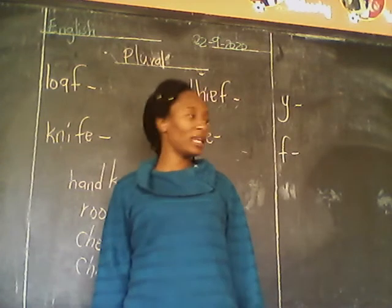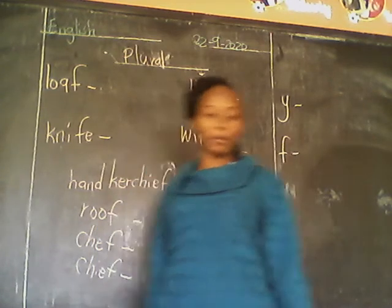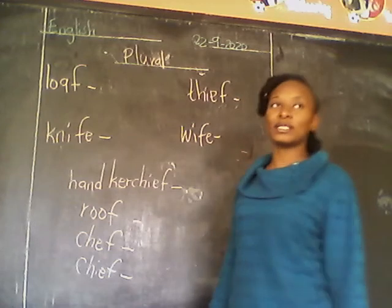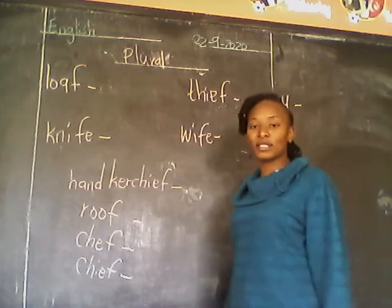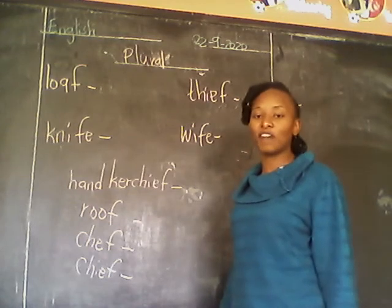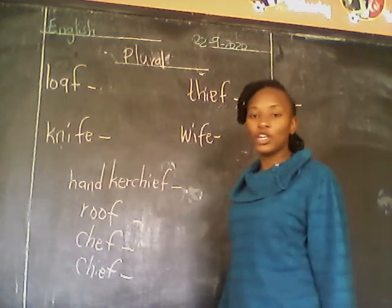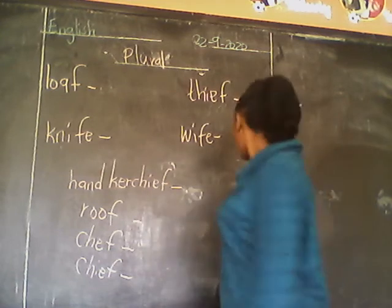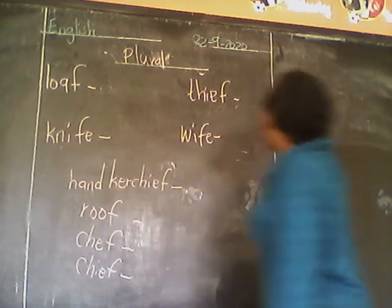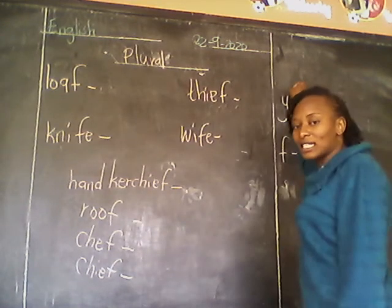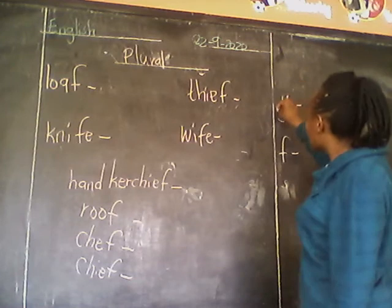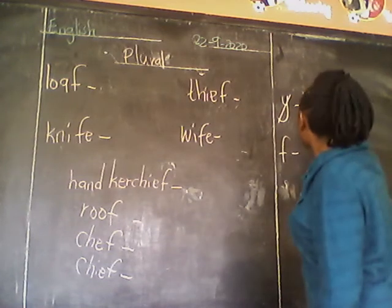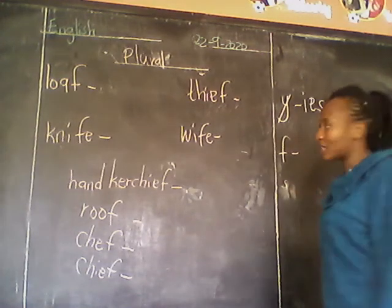We were learning Bruno last week. Remember, you were doing the words that end with Y. We said the words that end with Y and have a vowel next — you don't cancel, you just add S. But if it ends with Y and it's not followed by a vowel, you cancel it, then add ES or IES.